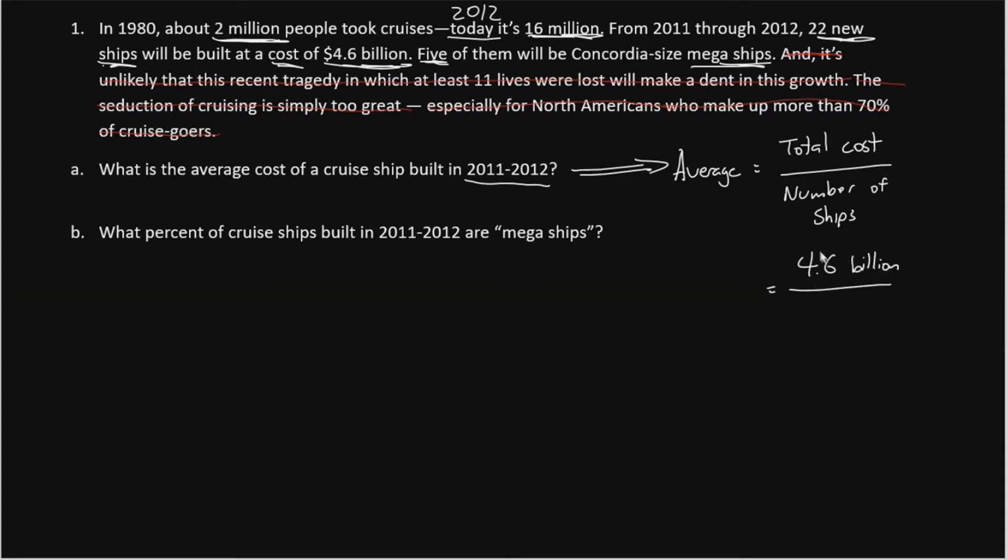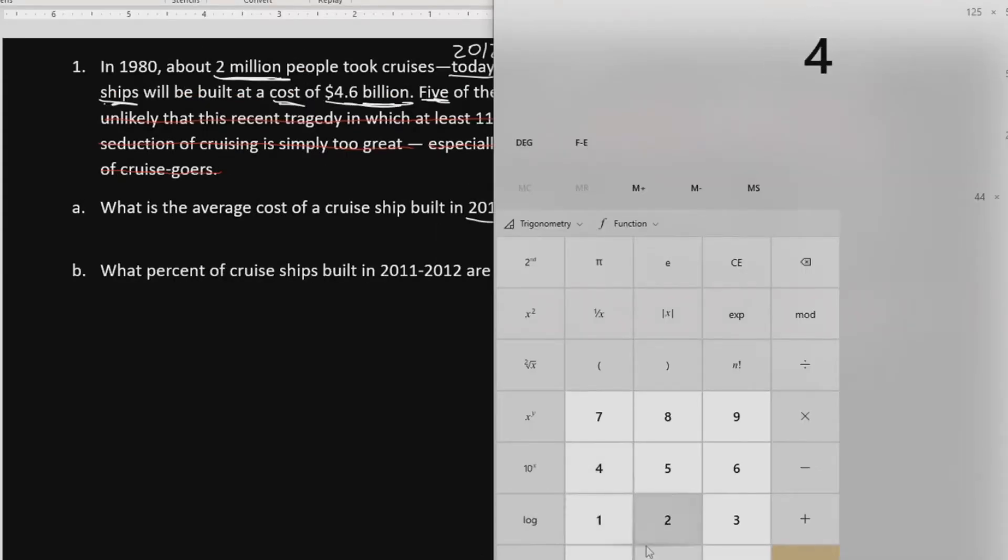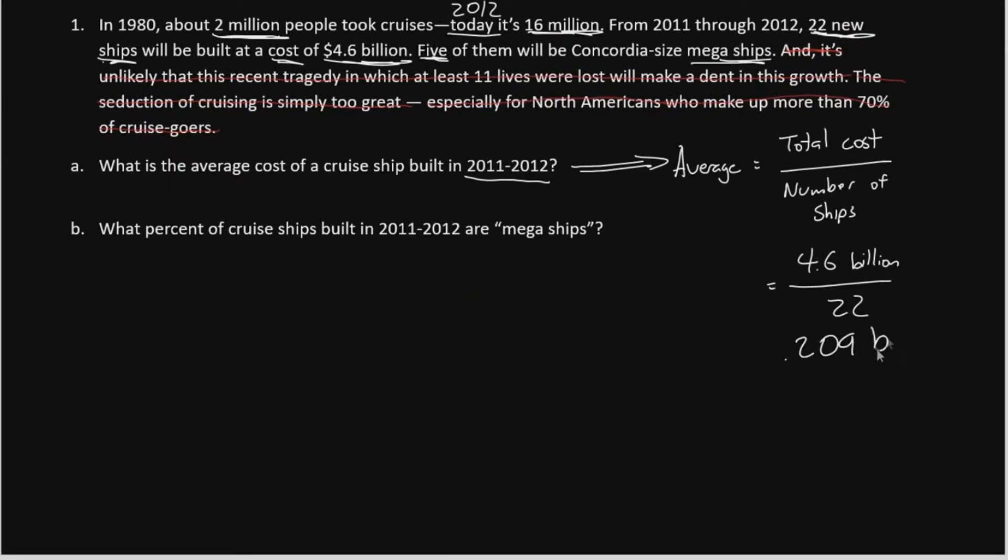And on the bottom, we place the number of ships. It said previously there were 22 new ships. So all we need at this point is to go to the calculator and say 4.6 divided by 22, press enter, and we get 0.20909, but we don't really need all those decimals. I'm just going to say 0.209, it should be enough. So we will say 0.209 billion dollars is the average cost of each ship.